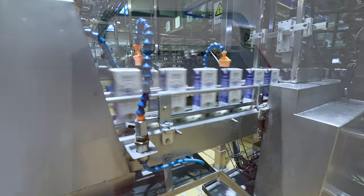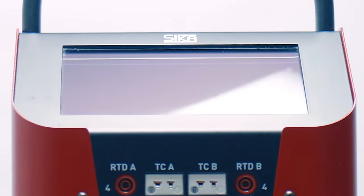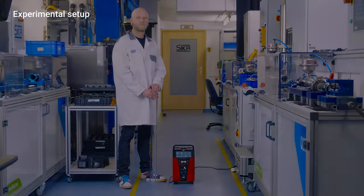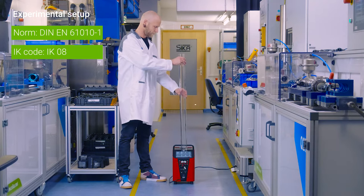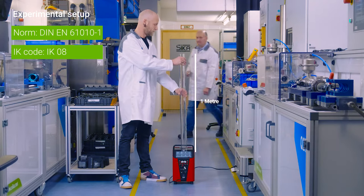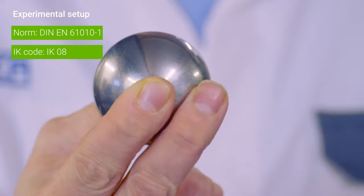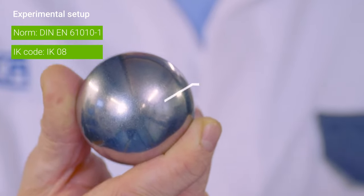We are aware of this danger and have therefore manufactured our touch screen using exponentially strong safety glass. In doing so, we employed the DIN EN 610101 standard, which states that a ball weighing 500 grams must not cause any breakage when falling onto the glass from a height of 1 meter. This corresponds to the IK code IK08.